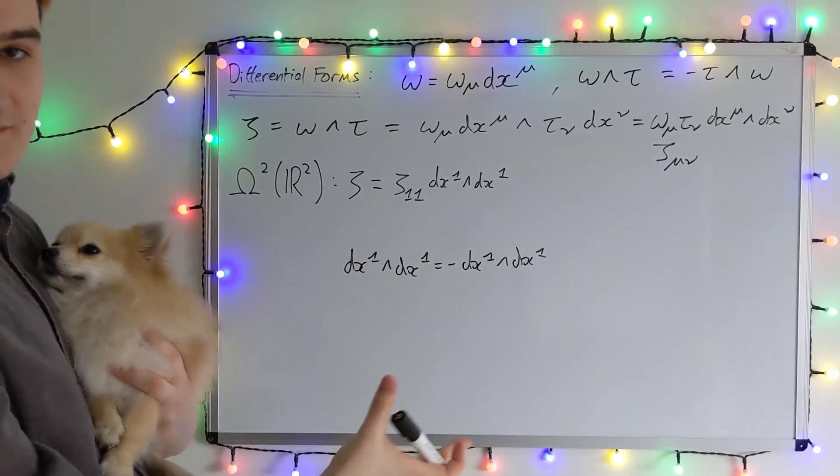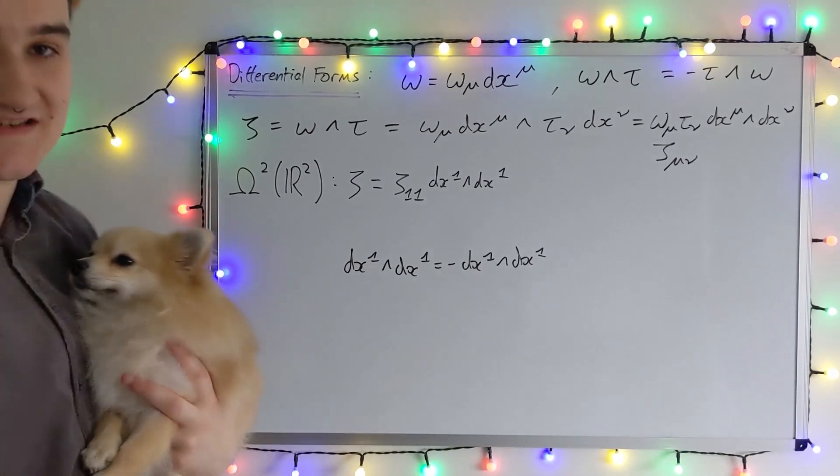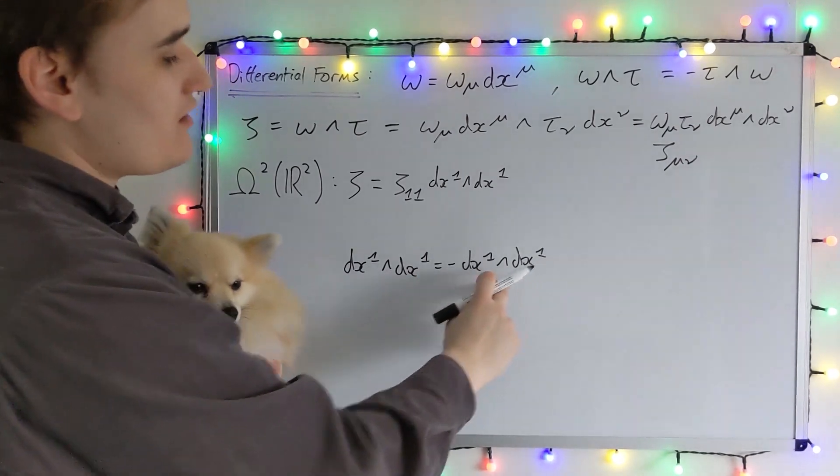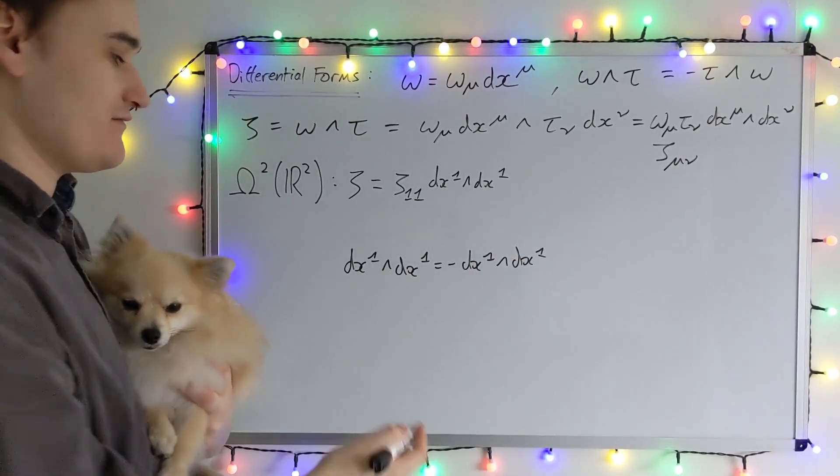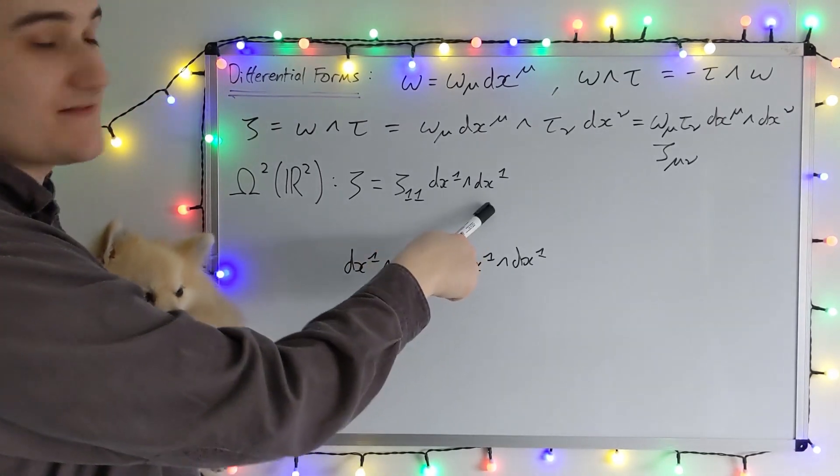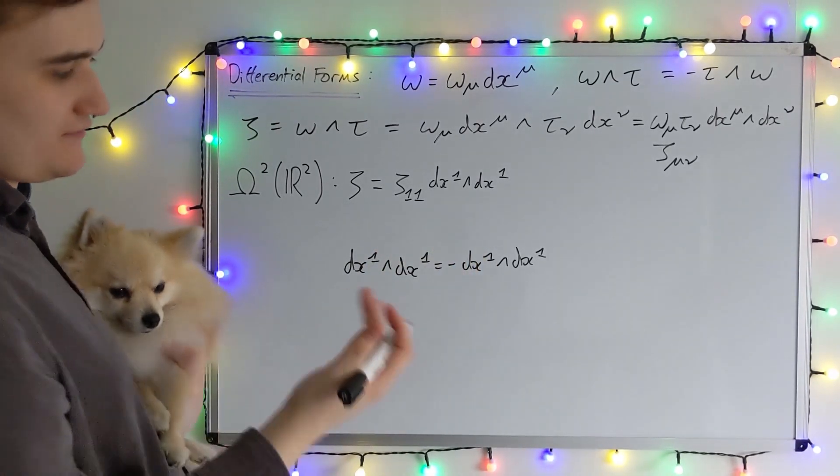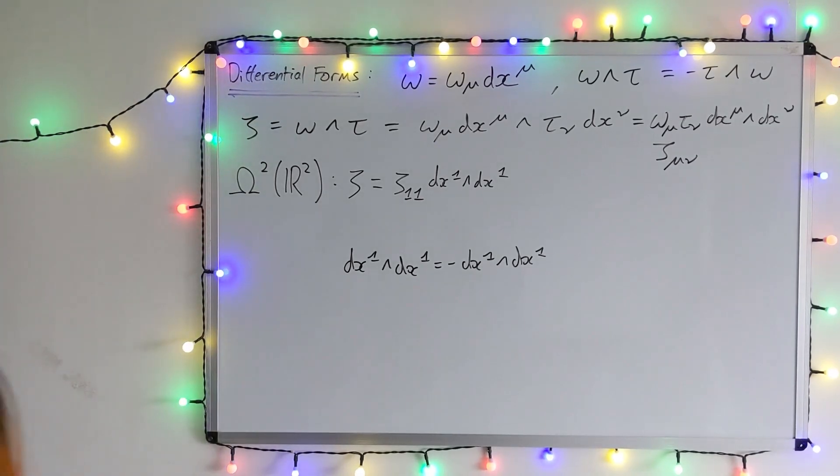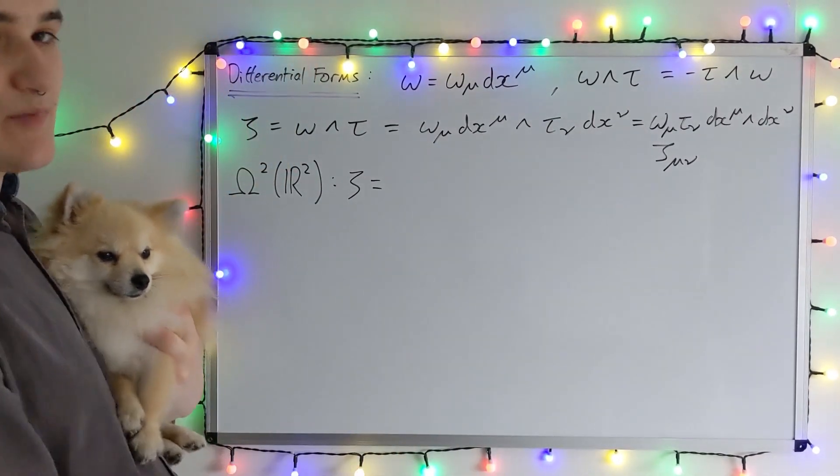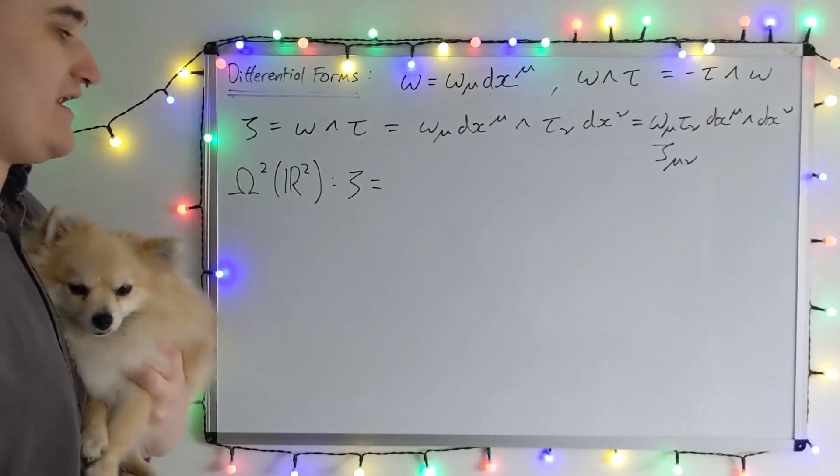But now we can quite happily say this whole expression has to vanish because something times itself can't be equal to the negative of that same something times itself. The whole thing just has to vanish. So by anti-symmetry, dx 1 wedge dx 1 vanishes. So the dx 1, dx 1 term is going to vanish. And by a similar argument, the dx 2, dx 2 term is going to vanish.